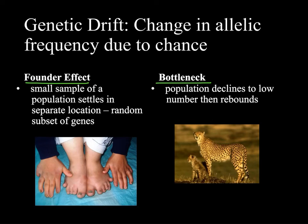A good example of the founder effect is seen in certain Amish populations in the United States, where a small group settled in an area and stayed largely isolated for many generations, resulting in a much higher prevalence of polydactyly from a rare genetic condition than seen in the broader population. A good example of the bottleneck effect is cheetahs — the population dipped very low and has since recovered, but there's little genetic variation remaining due to that bottleneck.